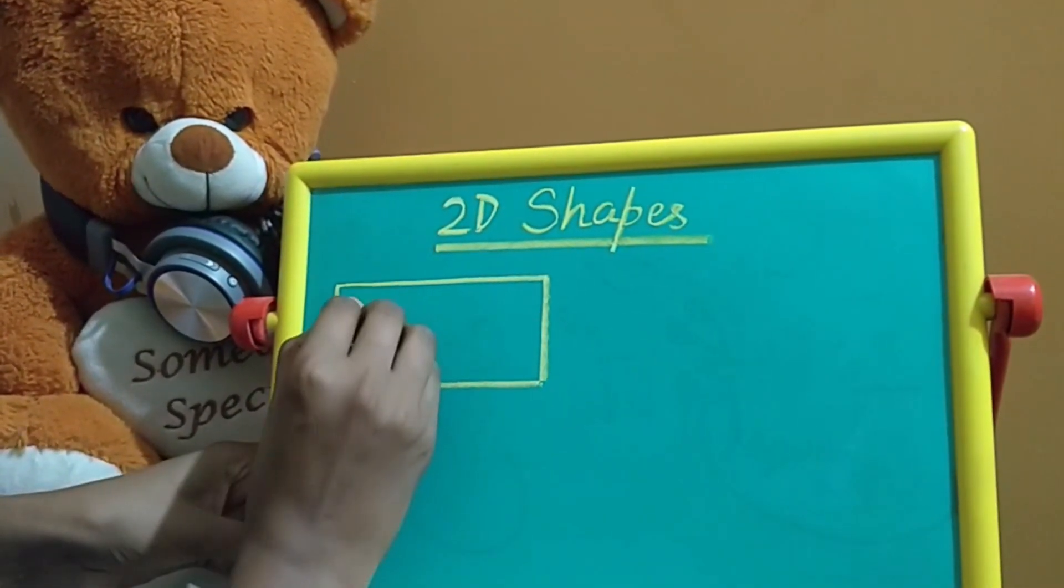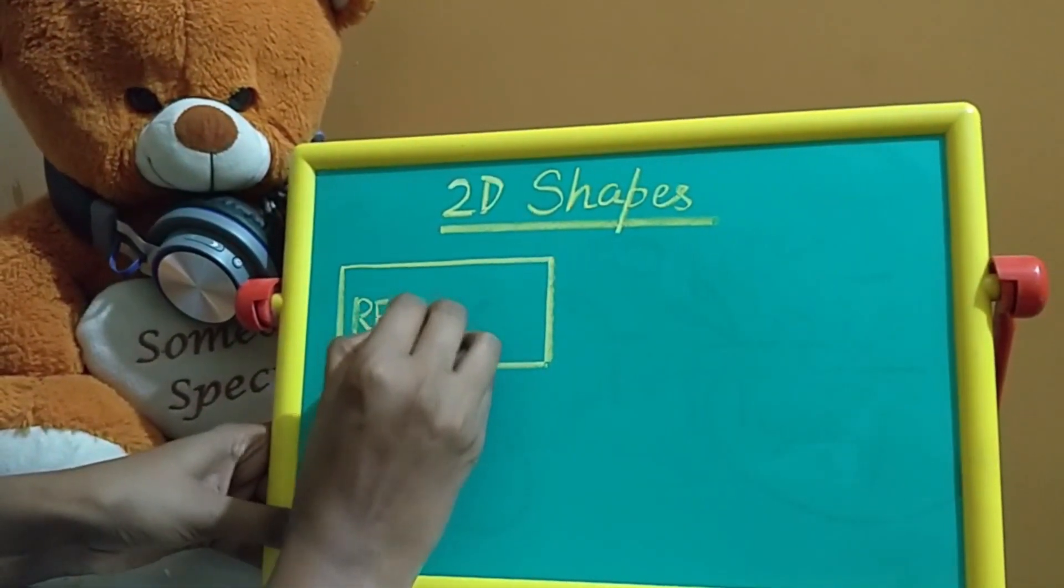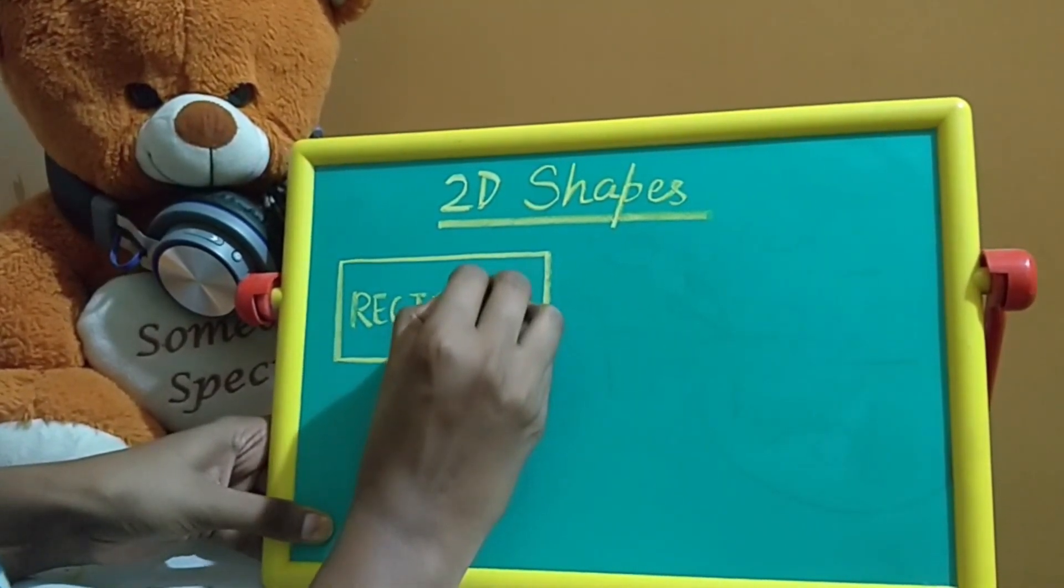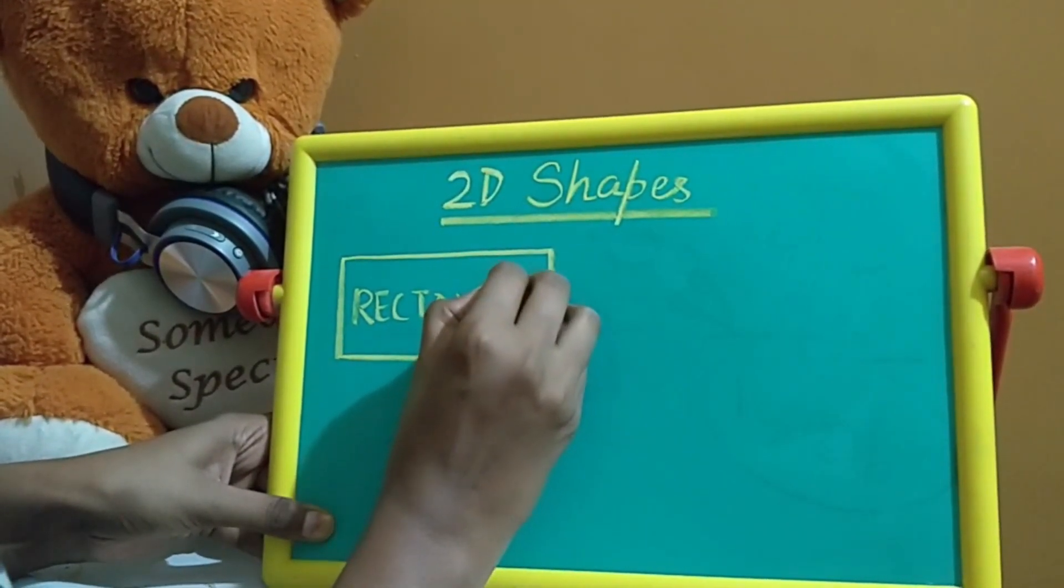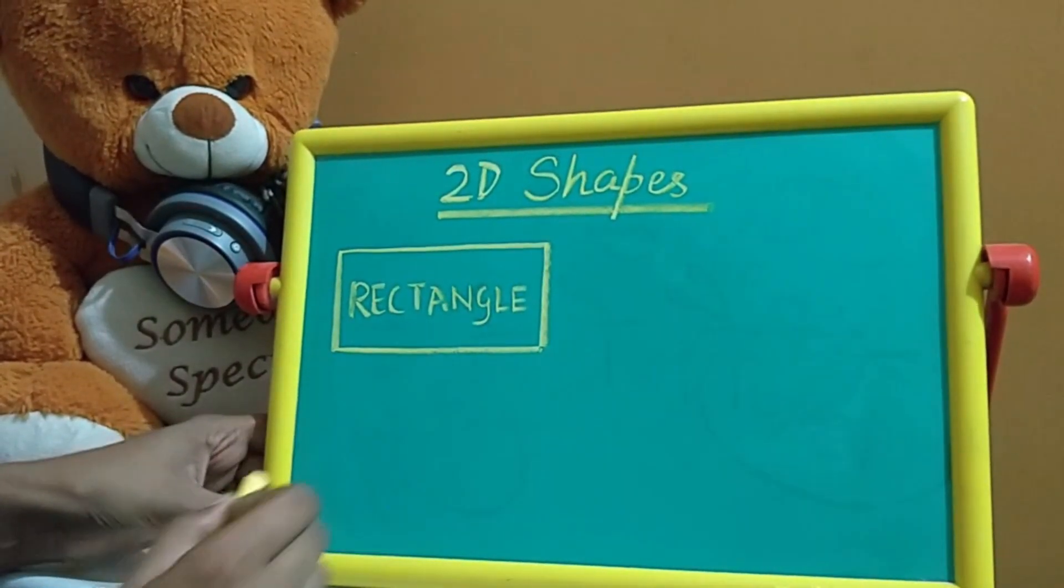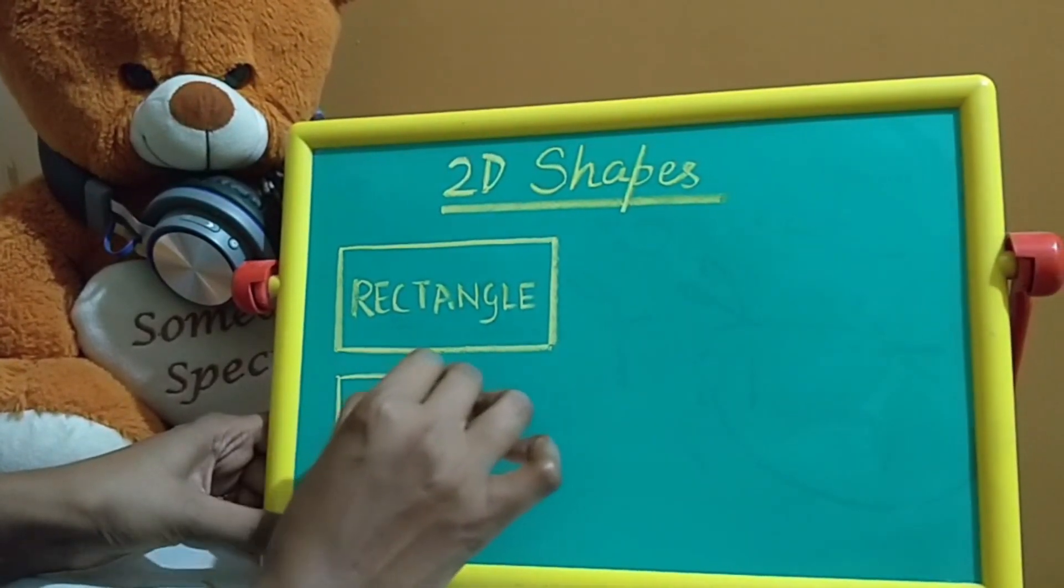So the first one we have is Rectangle. What is this Rectangle? A Rectangle has 4 sides. The opposite sides of Rectangle are equal to each other.